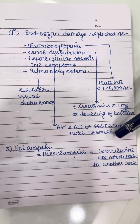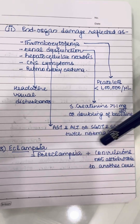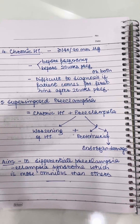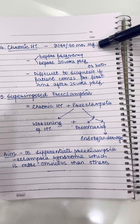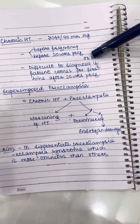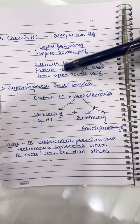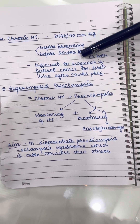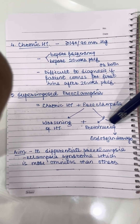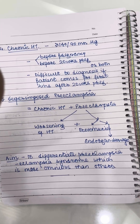Eclampsia is findings corresponding to preeclampsia with added convulsions not attributable to other causes. Chronic hypertension is a BP of 140/90 mmHg diagnosed before pregnancy or before 20 weeks of pregnancy, though it is difficult to diagnose if the patient presents after 20 weeks for the first time. Superimposed preeclampsia on chronic hypertension is when a chronically hypertensive patient reports a sudden worsening of hypertension with preeclampsia. We need to differentiate all these causes to identify preeclampsia syndrome, which is more ominous than the others.